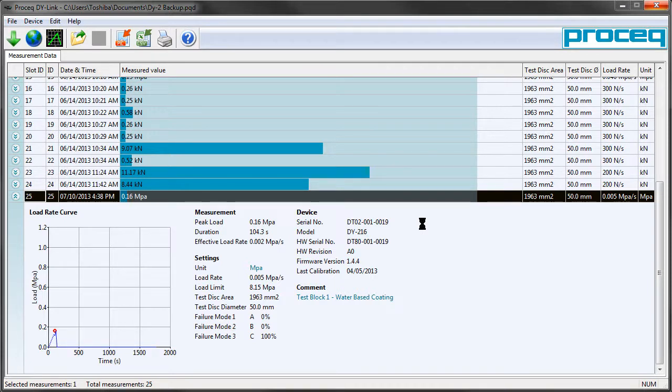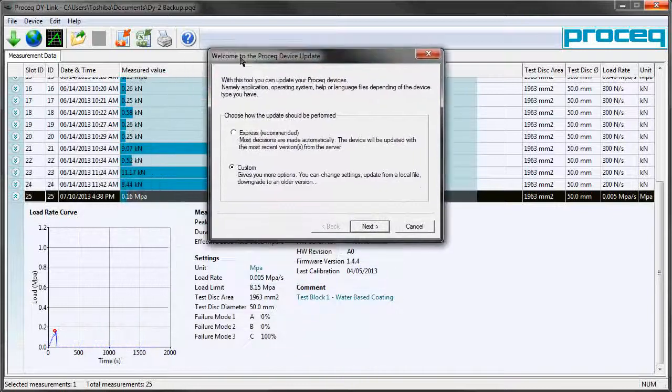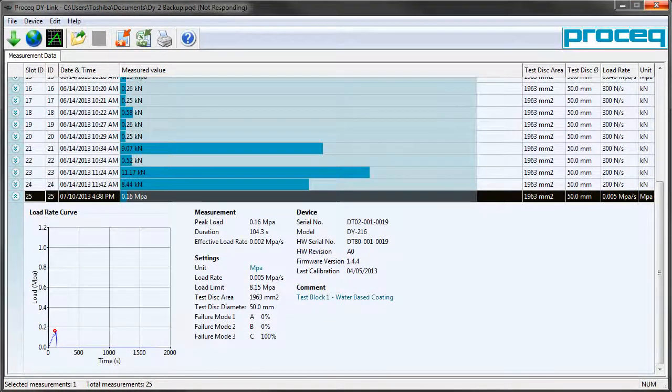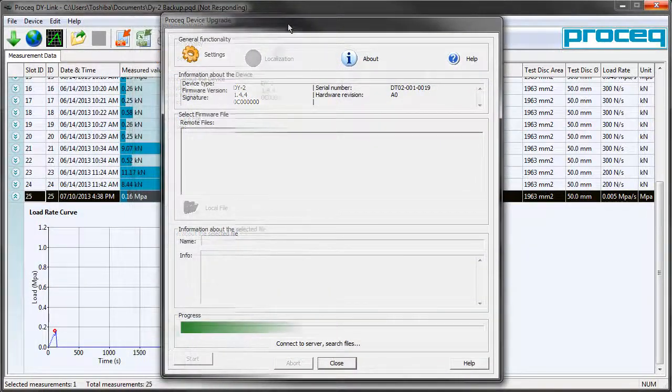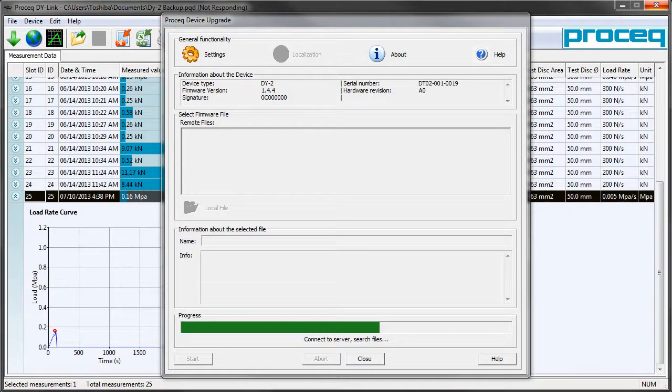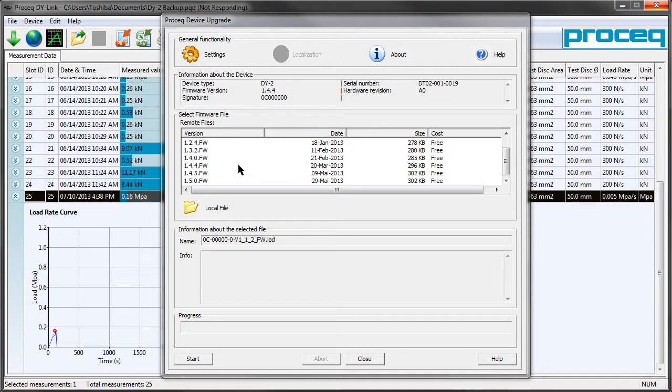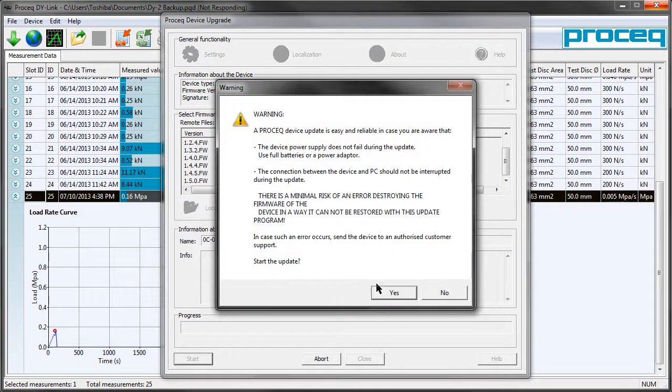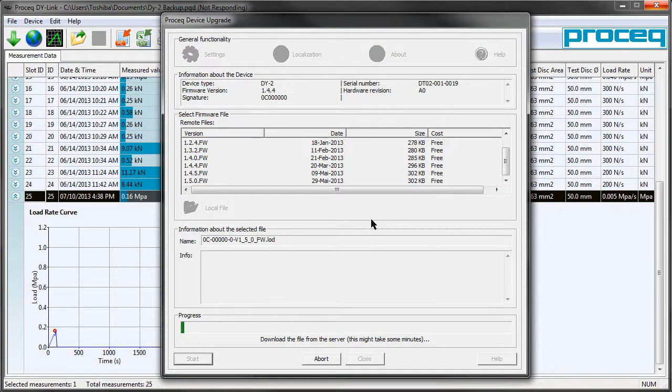The final thing we can do with Di-Link is along with updating the software to a new version we can actually update the firmware inside the Di2 to the latest version. This uses the same update software as all Proceq equipment connects to. We can select any version of firmware they typically put a few stable previous releases and the most recent. And these are all thoroughly tested before they're pushed out to the devices.